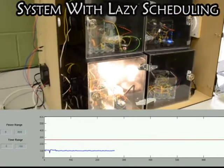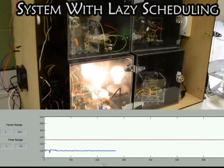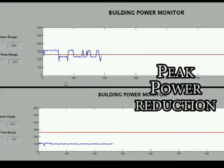On the other hand, the peak power drops significantly when the energy router coordinates the switching using a lazy scheduling algorithm. The peak power with the lazy scheduler is 40-50% lower than the uncoordinated case.